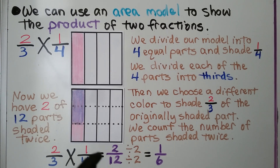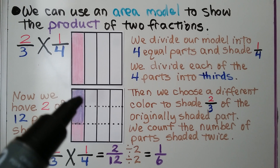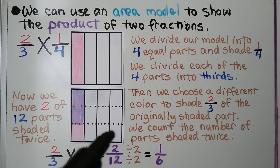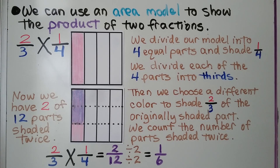So we have a numerator of two. There are four, eight, twelve parts now, so we have two-twelfths. We can write it in simplest form by dividing the numerator and denominator by their greatest common factor, which in this case is two. It's equal to one-sixth.